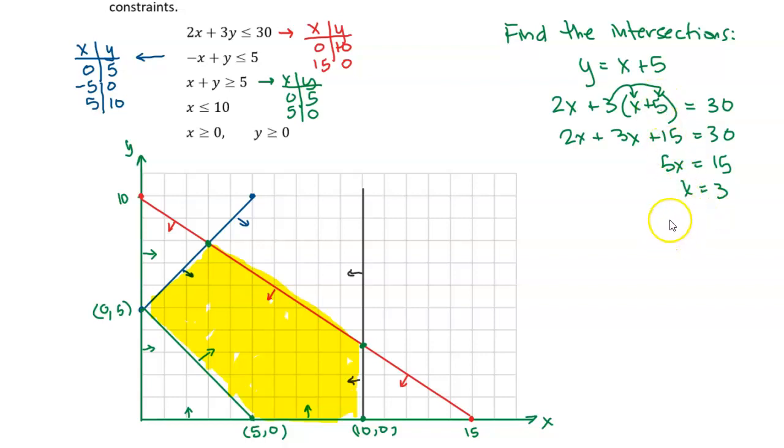And now I can just take that x value and put it back into this equation for y. So then that means that y is equal to x plus 5, so y is equal to 8. So this point right here is the point 3, 8. That point right there, the intersection of the blue line and the red line.